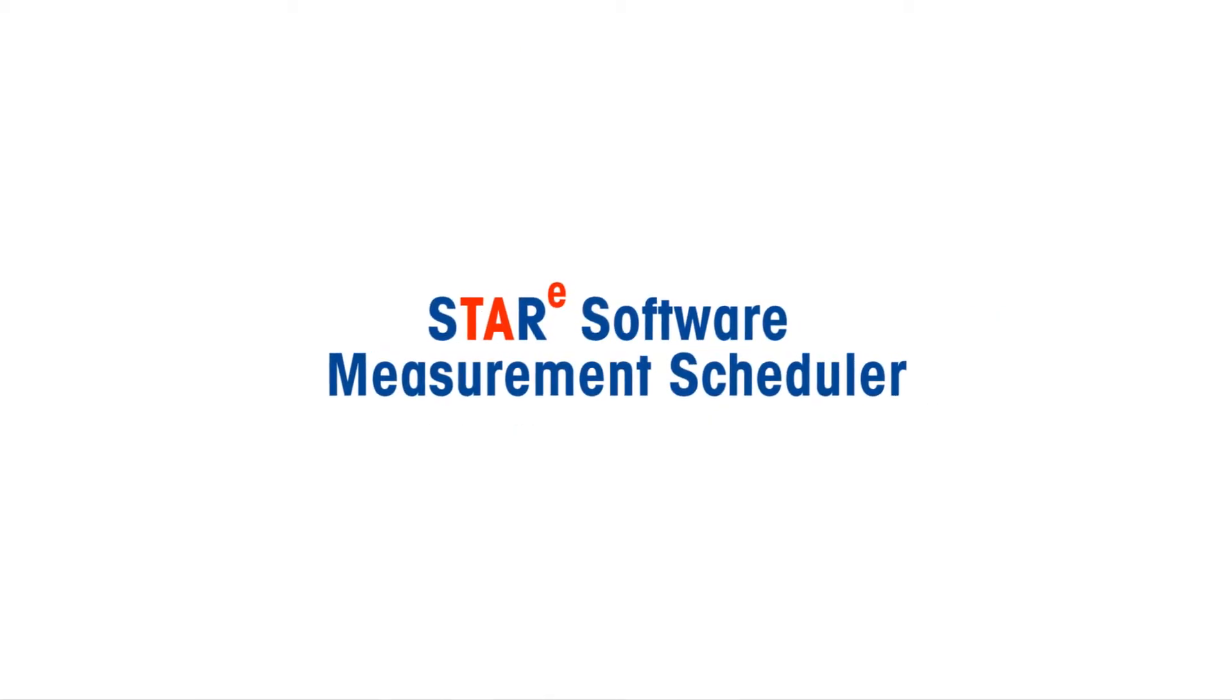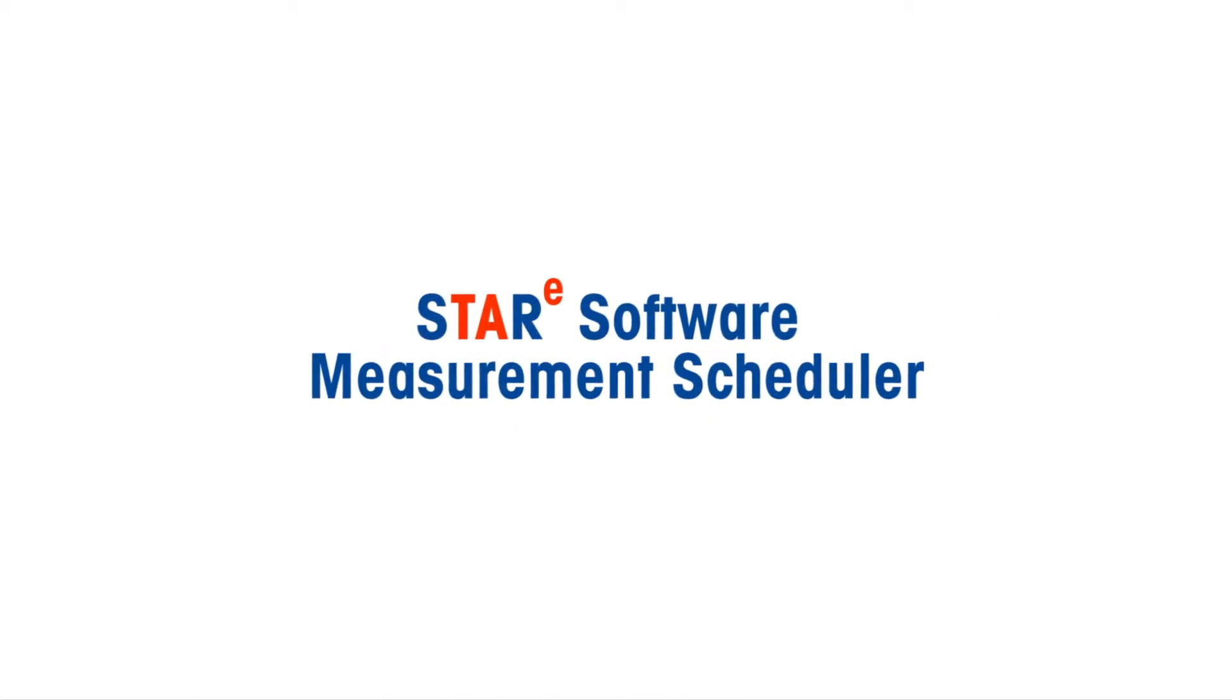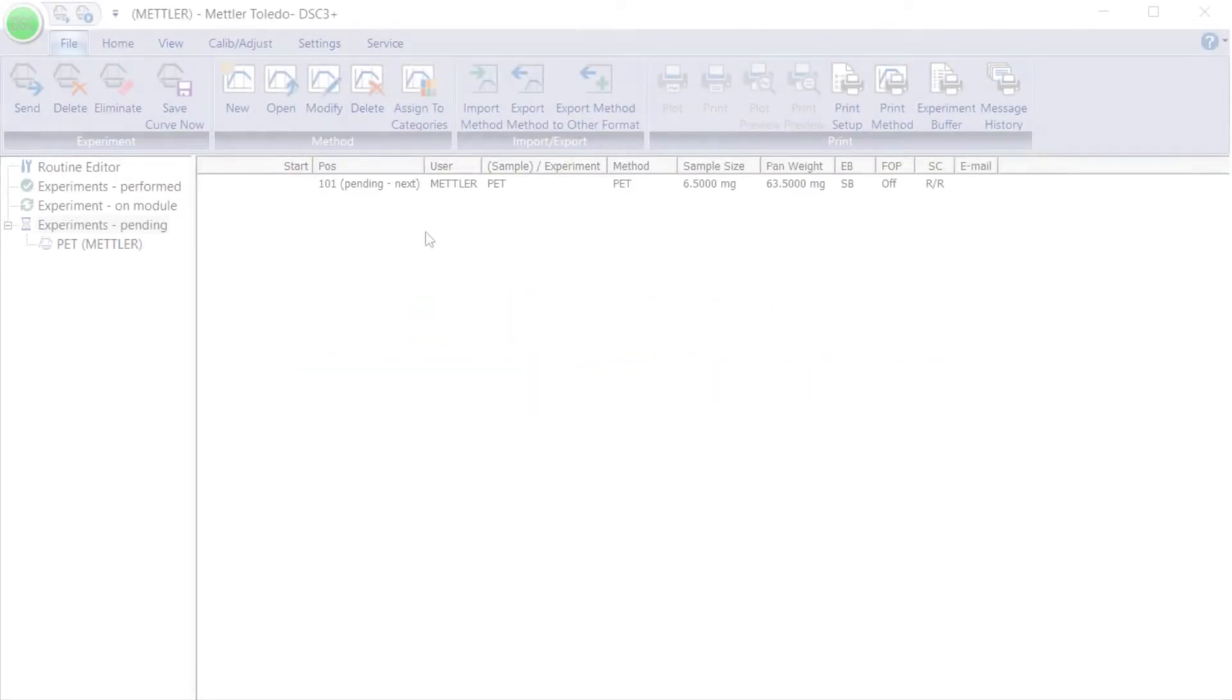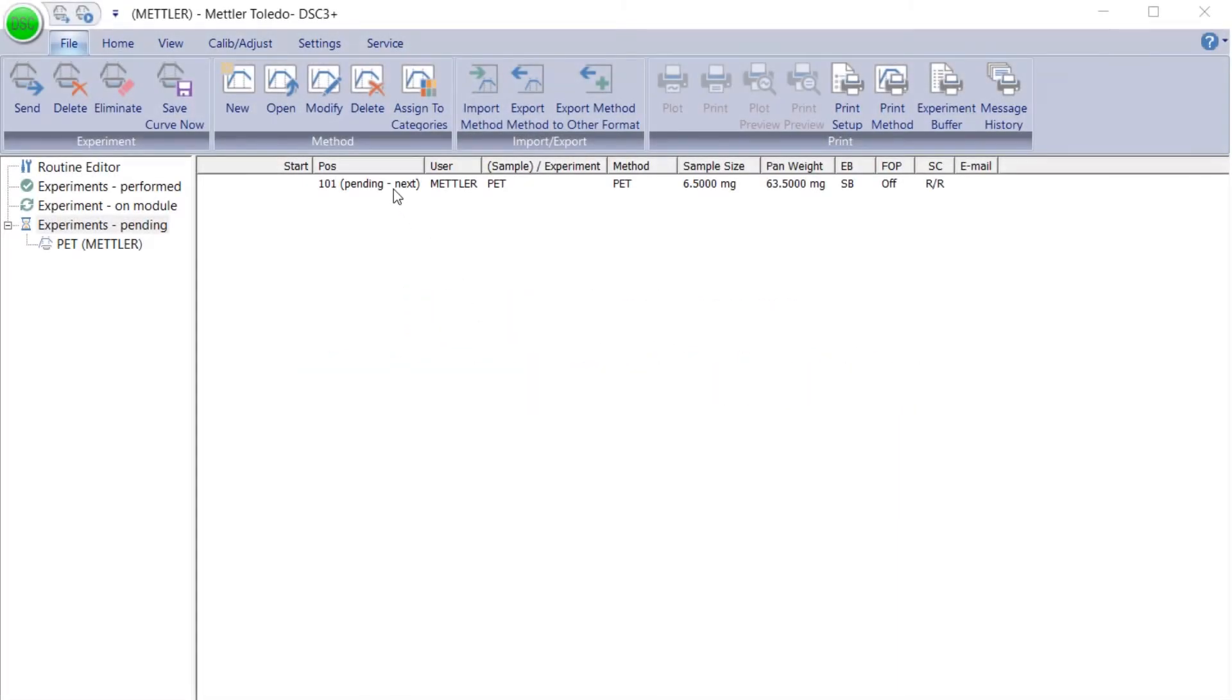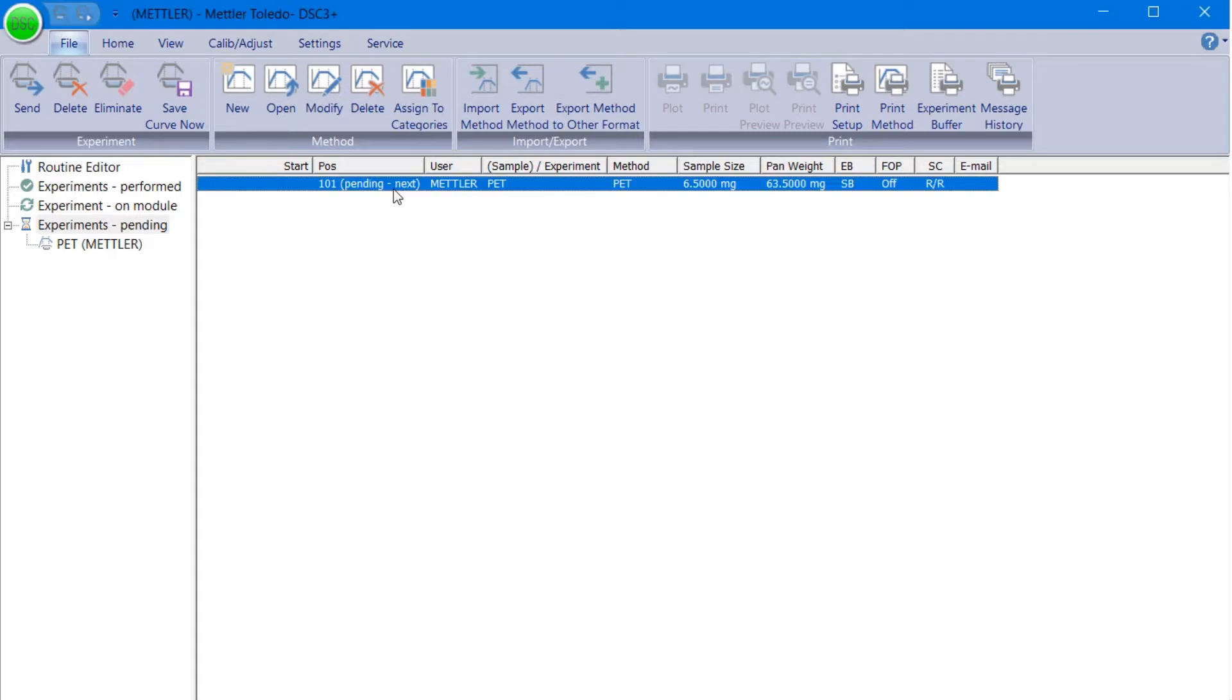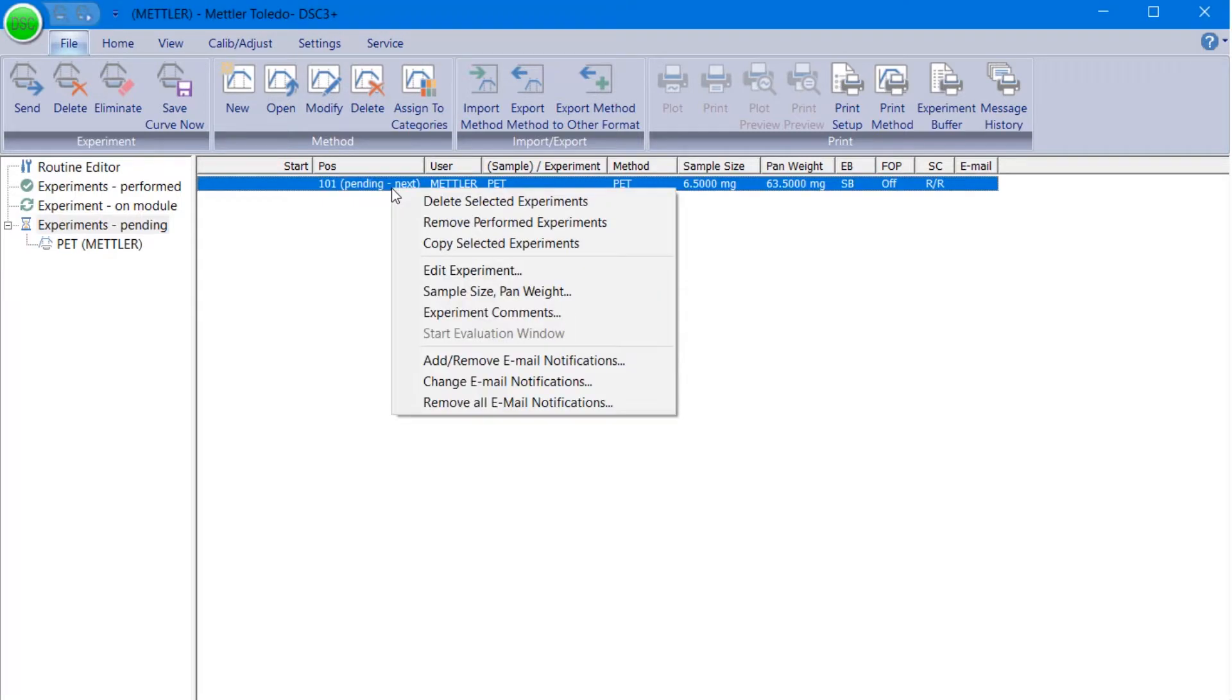We will now show you how to schedule the start time of an experiment. Go to the Module Control window in the STAR-E software and select the desired experiment from the experiment buffer by right-clicking on it.